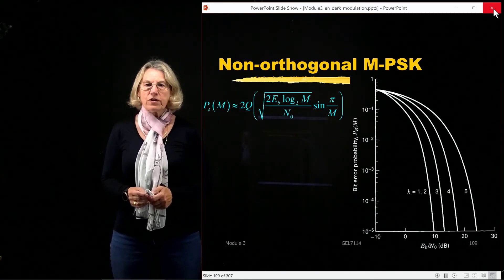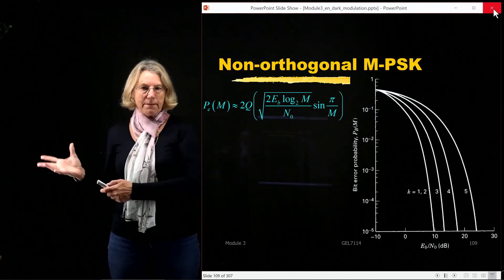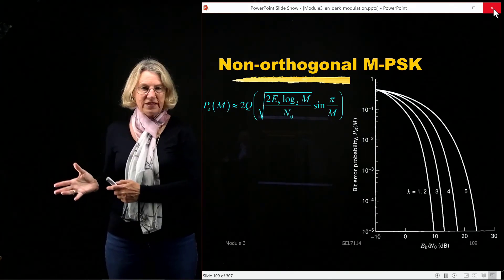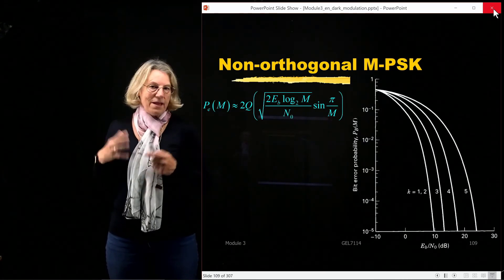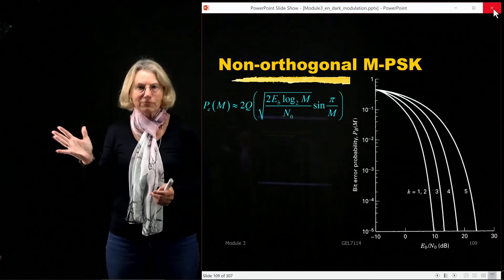If we were to look at non-orthogonal M-PSK, remember M-PSK was the previous case that we examined, and this M-PSK is all around a circle, and certainly the symbols are not orthogonal from one another.